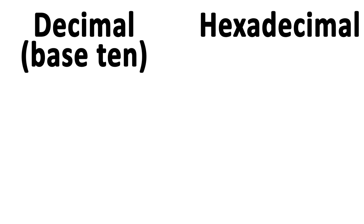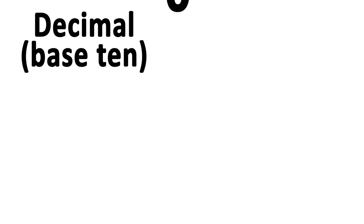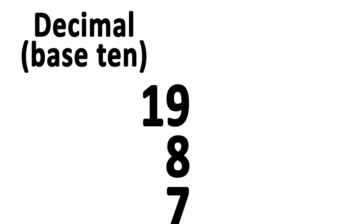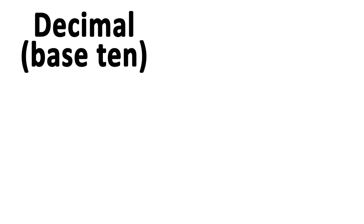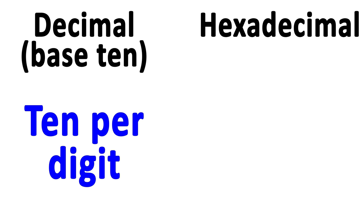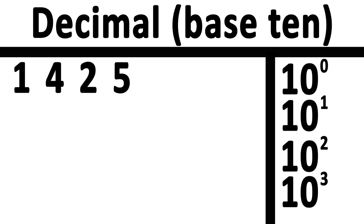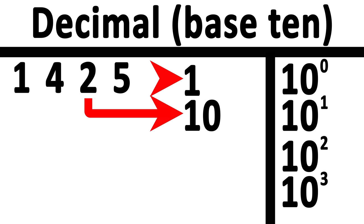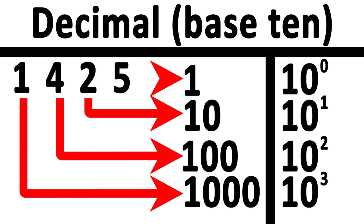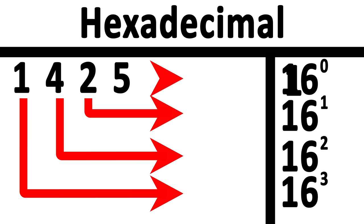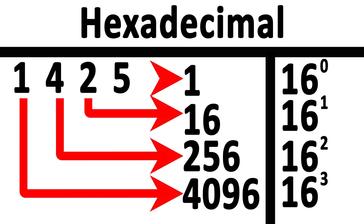Base 10 is the counting system we've all used — we have the numbers 0 through 9, and once we get to 9, we add a digit to the left and flip the previous digit back to 0. Hexadecimal works the same way, but instead of having 10 values for each digit, it has 16 symbols for each digit, meaning each digit to the left represents an increasing power of 16 rather than 10. In our normal decimal system, this is the number of ones, tens, hundreds, thousands, and so on. In hexadecimal, this first column is the number of ones, the second is the number of 16s, then 256s, 4096s, and so on.